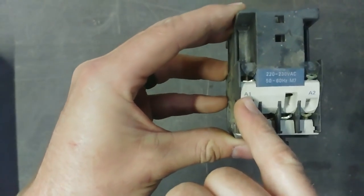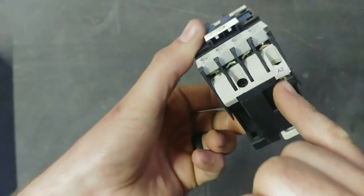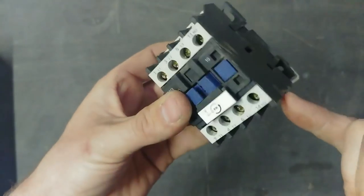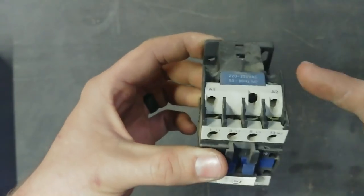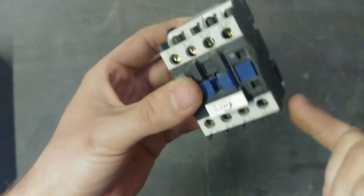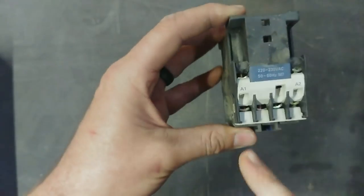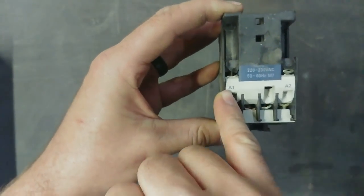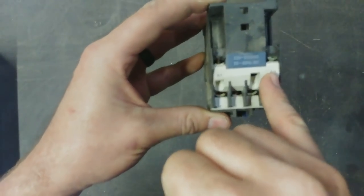You'll notice on here that there's an A1, an A2, and this side is also an A2. This A2 is actually bridged. So if you connect live there and neutral there, it's not going to switch on. It's going to be a dead short. What you want to do is take the A1, put your live wire there. A2, your neutral wire.